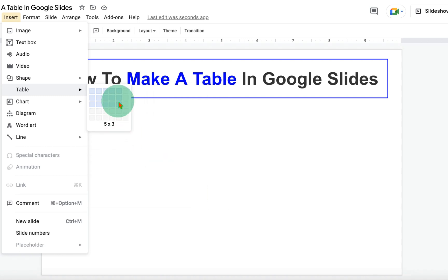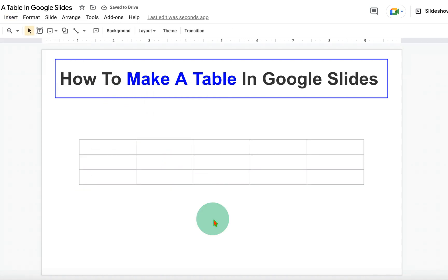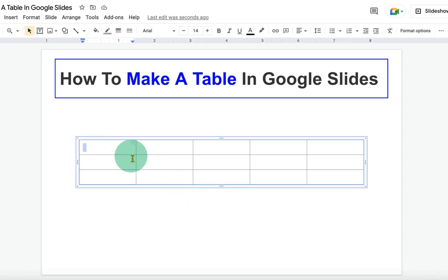For now, we will select 4 by 3 table. Notice that this table doesn't look good. It has thin borders and are of gray color.